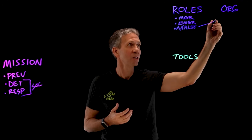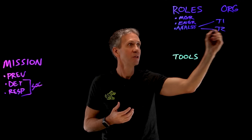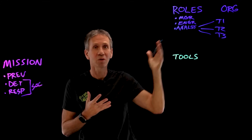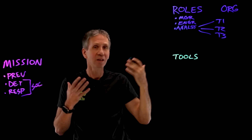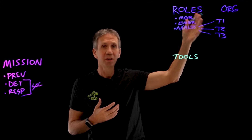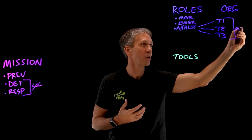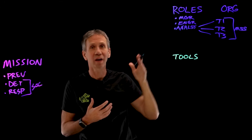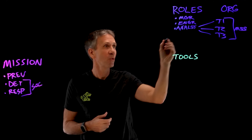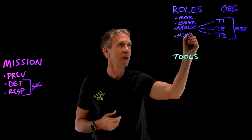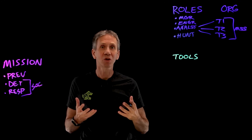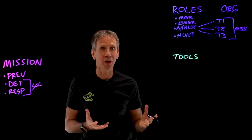SOC analysts are often organized in different tiers depending on the level of complexity of the problem. Tier one does the initial fielding of the issues, and then if it needs deeper investigation, tier two and tier three. These could be done in-house or as part of a managed security service. The fourth role is a threat hunter, someone who comes up with a hypothesis and then proactively goes out trying to find where the problem areas might be.